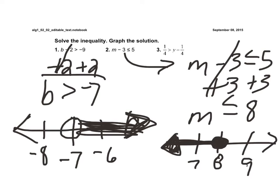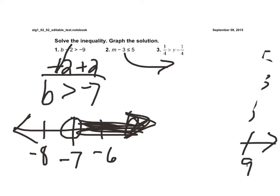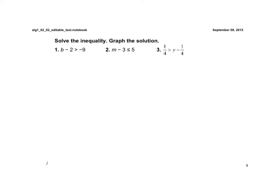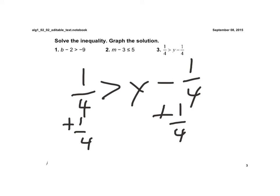Now, I'm going to go ahead and erase these before I do number 3. Now, if we look at number 3, again, now we have 1/4 is greater than y minus 1/4. And so, to get the y by itself, I have to add 1/4 to each side. So, I'm going to add 1/4 to each side.